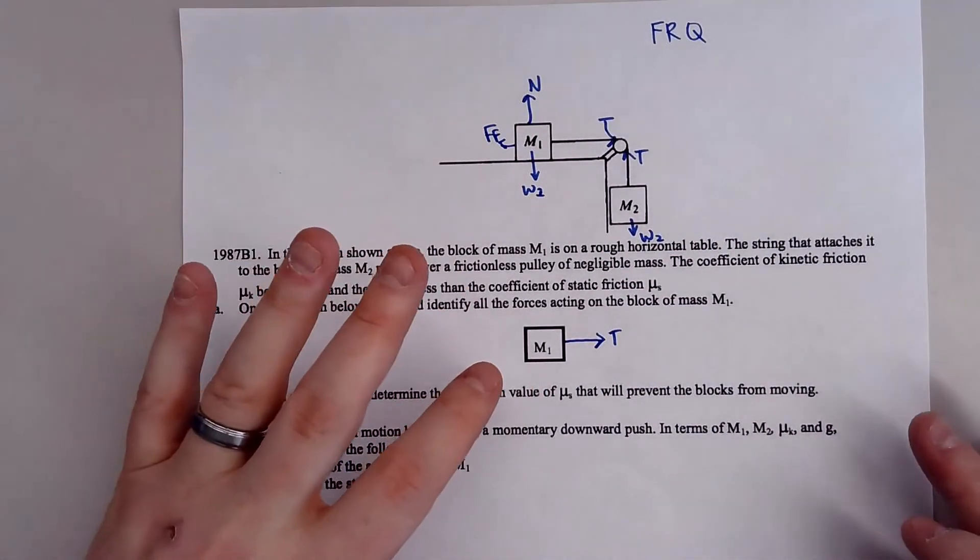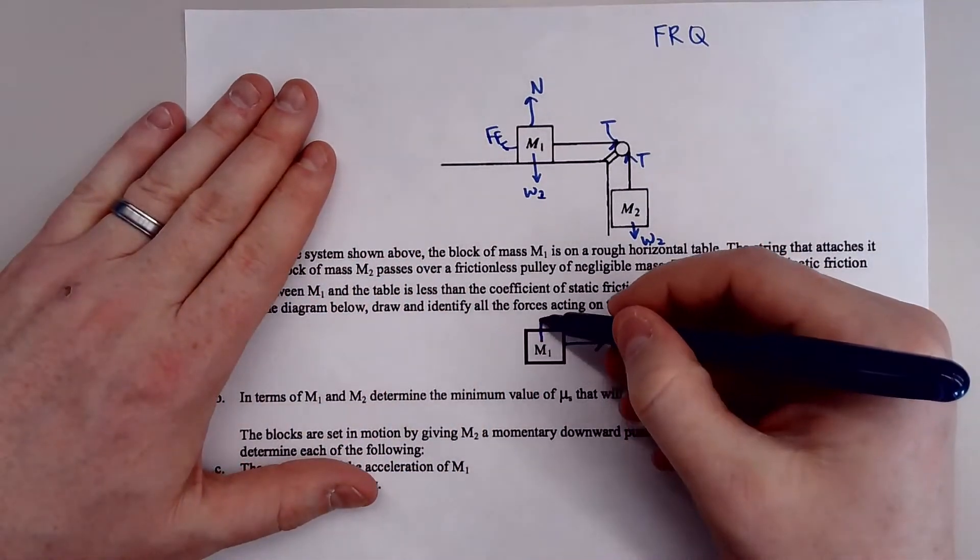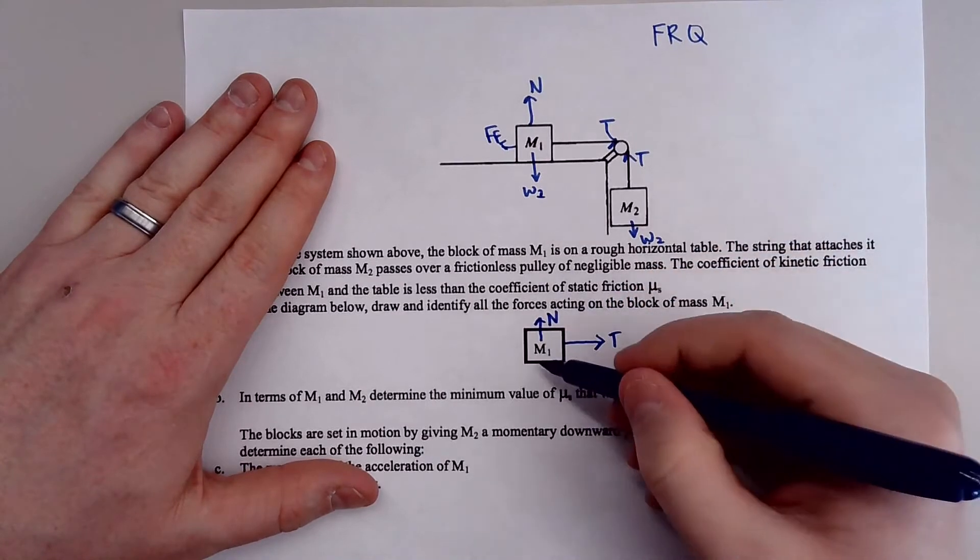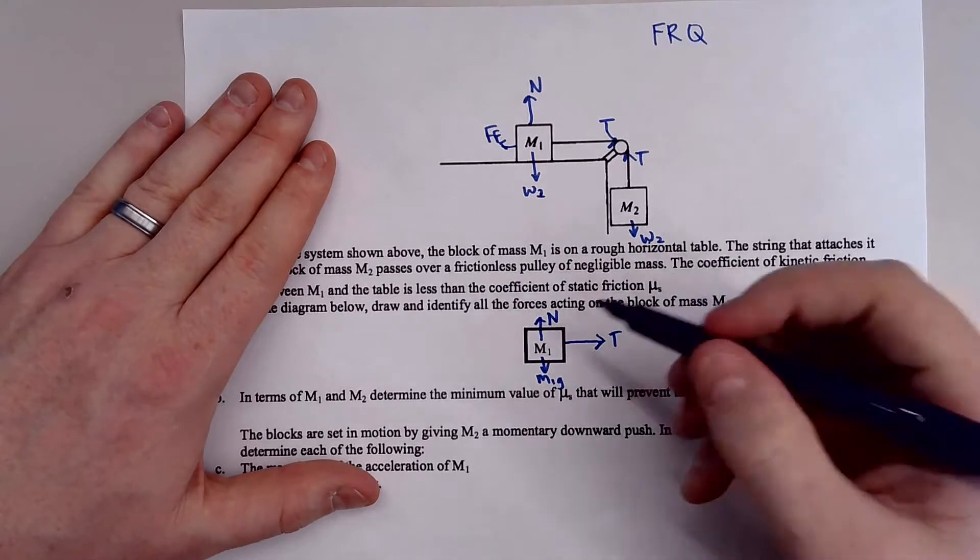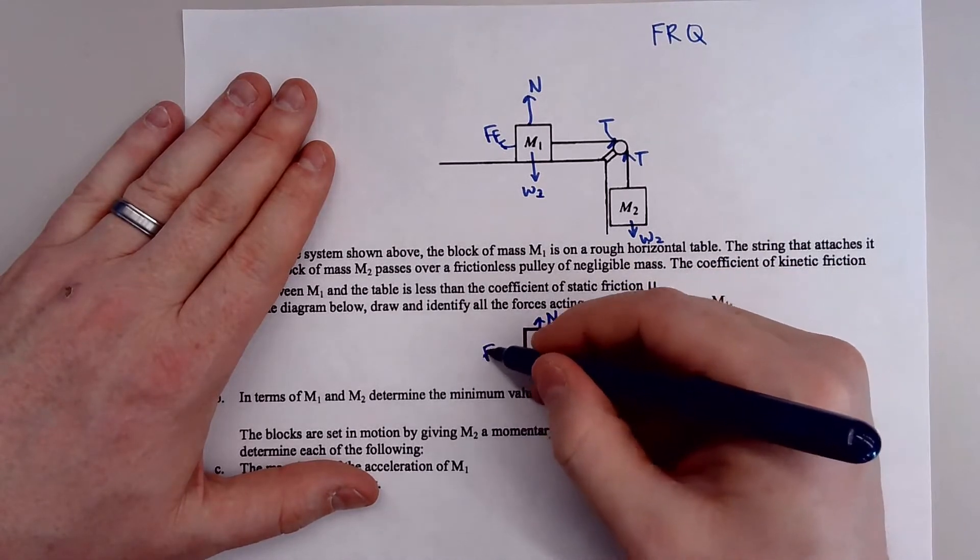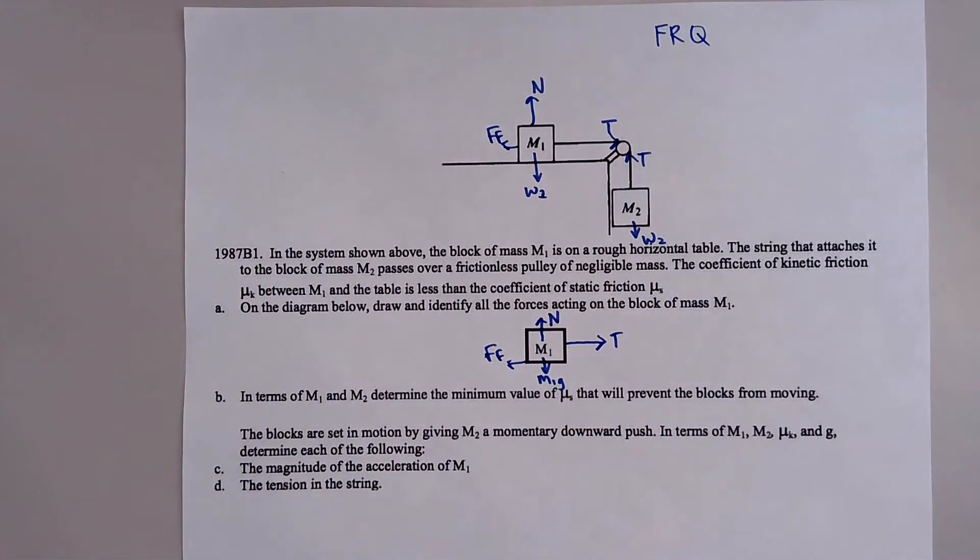And there is a normal force and there's also some force of friction. So if we look at this and we translate this to this block, notice you'll have your normal force. You'll have M1 times gravity, which is just the weight of 1. And you'll have some sort of force of friction on the bottom of it.